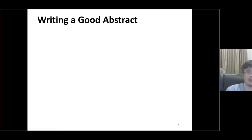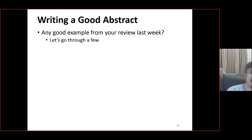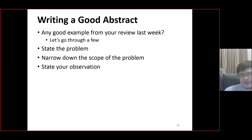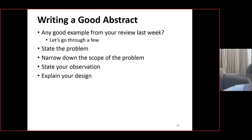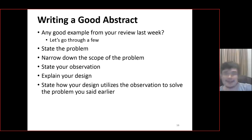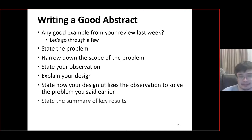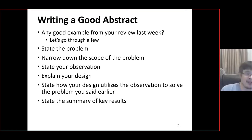To write a good abstract: state the problem, then narrow down the scope of the problem, then state your observation — 'we observe X, Y, and Z' — and then with those observations lead to your design. Talk about how your design utilizes the observation to solve the problem, link everything back to the problem, and then put in a summary of key results: for example, 'our technique achieves 2x better performance.'